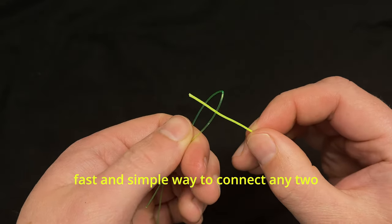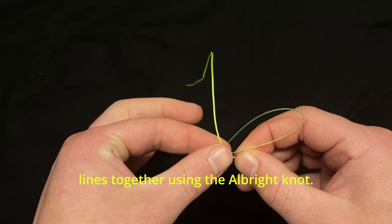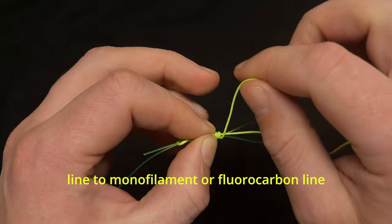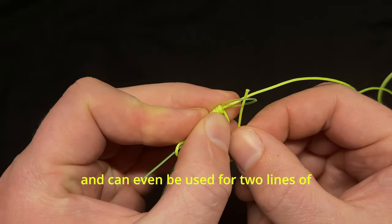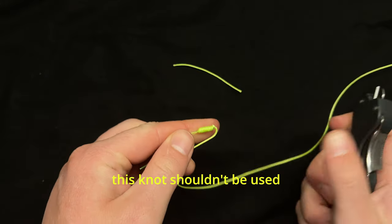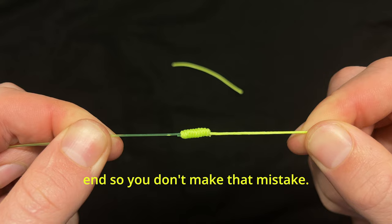In this video we're going to learn a fast and simple way to connect any two lines together using the Albright knot. This knot can be used to connect braided line to monofilament or fluorocarbon line or any combination of those, and can even be used for two lines of very different size. I'll also go over one situation where this knot shouldn't be used, so be sure to watch all the way to the end so you don't make that mistake.